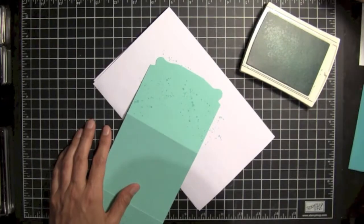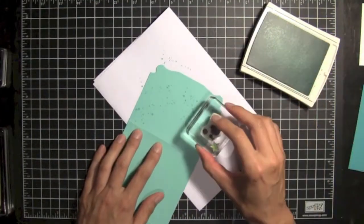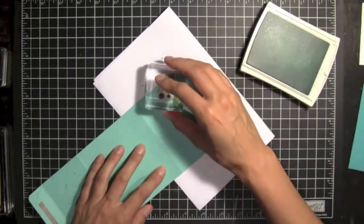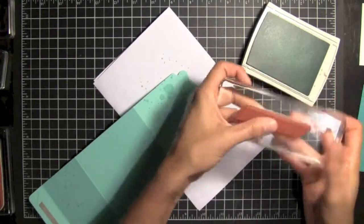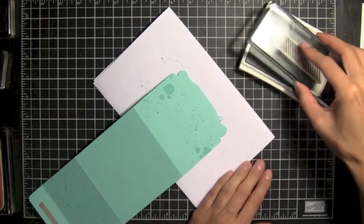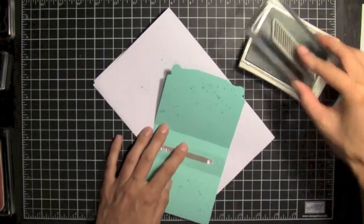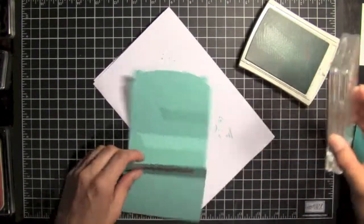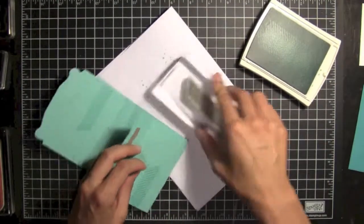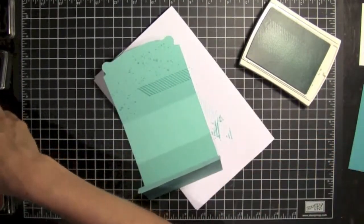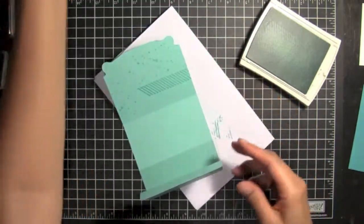And then we're going to use the little splatter piece, too. Put some on the top. And then we'll use the stripes. And we can put some over here. Put some over there. Okay, so we've got kind of this splatter effect on both sides.